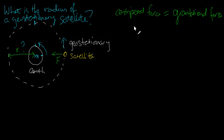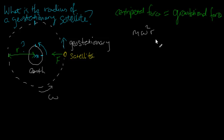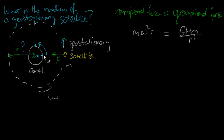The equation for the centripetal force is m·ω²·r, where omega is the angular velocity of the satellite, r is the radius, and m is the mass of the satellite. This is equal to the gravitational force given by Newton's law of gravitation, where big M is the mass of the Earth and G is the gravitational constant. It is r that we want, and we see r in these equations, so let us try to solve for r.